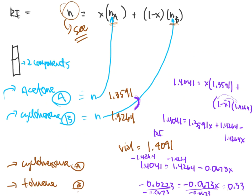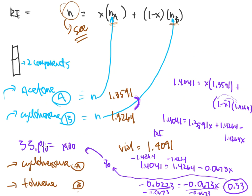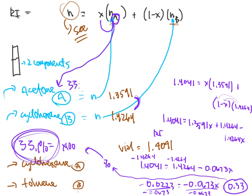This is a percentage, so I multiply by 100, which gives me around 33.1%. The x value corresponds to the first component, which was acetone. So 33.1% of that sample is acetone. The remaining portion — around 66% — is cyclohexane. That is how you do these calculations, and that's what you'll be doing for every single sample fraction you collect in this lab.